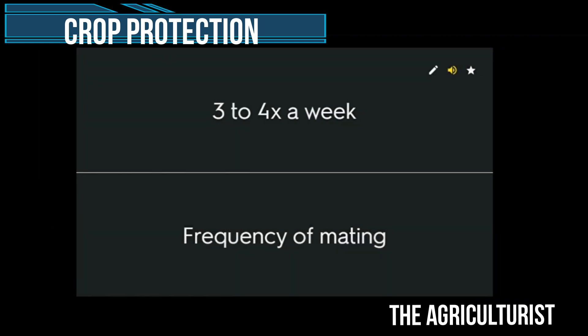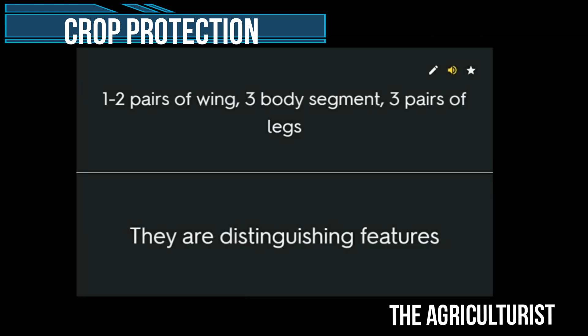Crop rotation, crop complementation, sanitation — examples of cultural control methods. Three to four times a week: frequency of mating. One to two pairs of wings, three body segments, three pairs of legs — distinguishing features of insects.